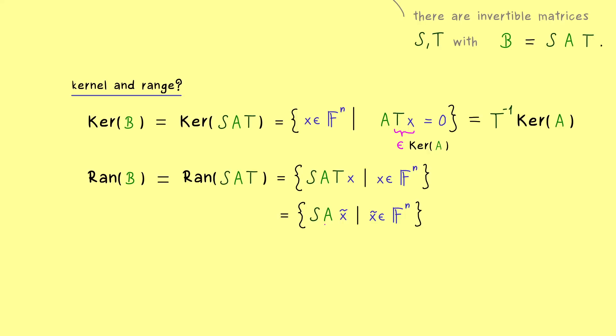And moreover we also see that A times x tilde will give us the whole range of A. In other words, here we also get a nice formula for the range of B, we get that it is S times the range of A. So there we have it, this is how the range transforms under the equivalence relation. This means it's definitely possible that the range also changes.